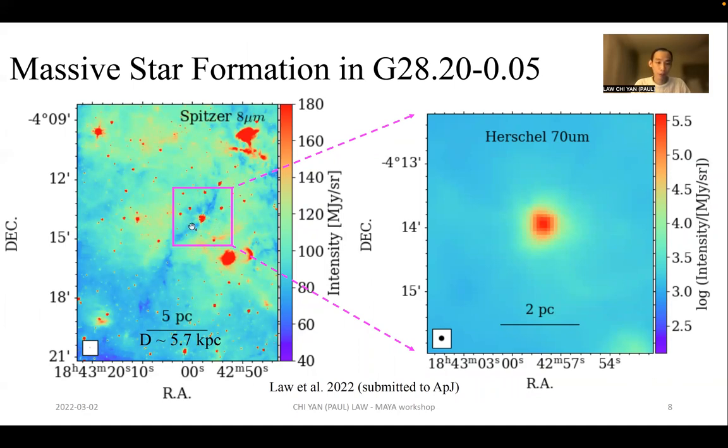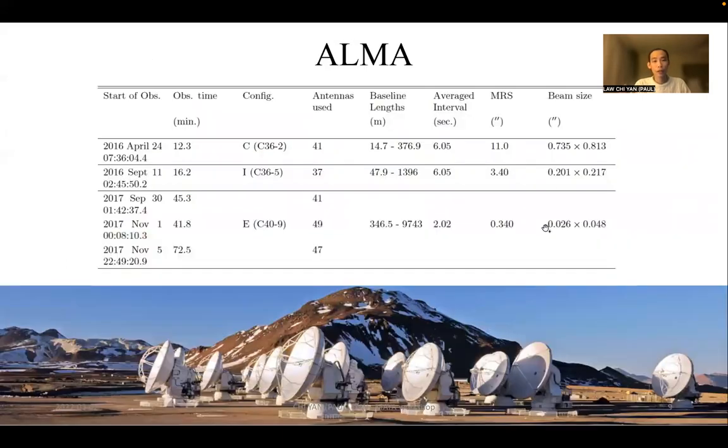On the left here we see the Spitzer 8 micron survey, and the source is located in the center of this square region, embedded within a filamentary infrared dark cloud. Infrared dark clouds are known as the progenitors of massive stars and massive star clusters. On the right is the Herschel 70 micron image of G28 with roughly the region covered by the square, and we can see the compactness of this source. To really resolve and characterize the properties of this source, we need high resolution data, and ALMA is the prime instrument for this project. We carried out ALMA band 6 observations for three different configurations across a resolution of 0.8 to 0.026 arcseconds.